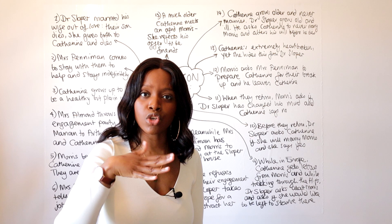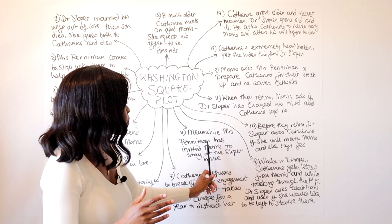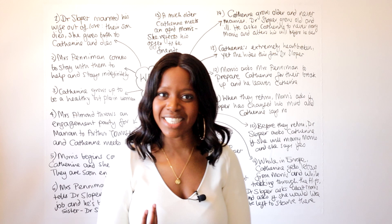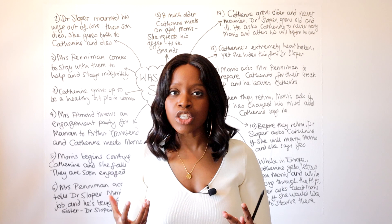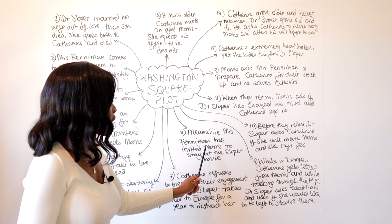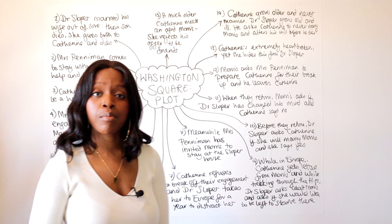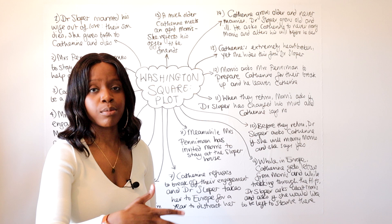While Dr. Sloper and Katherine are in Europe, Mrs. Peniman is left alone in the house. Because she loves Morris so much, she invites him to stay at the Sloper household. Morris very quickly gets accustomed to lounging about and doing nothing. His behaviour at the Sloper residence while both Katherine and Dr. Sloper are away clearly illustrates his intentions — he is not a man who wishes to work hard; he is a man of leisure who wants nothing but Katherine's money.